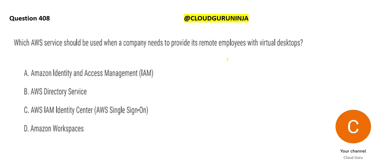You want to provide desktops — like there are dead terminals, meaning you only have a monitor and network connection but no CPU. If you need that kind of setup, you want to establish virtual desktops in AWS. How would you do that? It's easy to scan the options. Option A — IAM is a security solution; it will not help you with remote desktops.